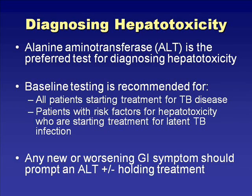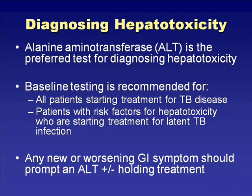Baseline testing is not recommended for all patients starting latent TB treatment, but should be done for any patient starting treatment for active disease, those with risk factors, or any reason to suspect underlying liver disease—for example, symptoms without a prior diagnosis. Anyone with new or worsening GI symptoms should have a prompt ALT checked, with or without holding medications. The decision to hold medications may be based on degree of symptoms, other risk factors, and whether treating active versus latent tuberculosis. With latent TB, the threshold to hold medications is very low; with active TB, you must balance against contagiousness.